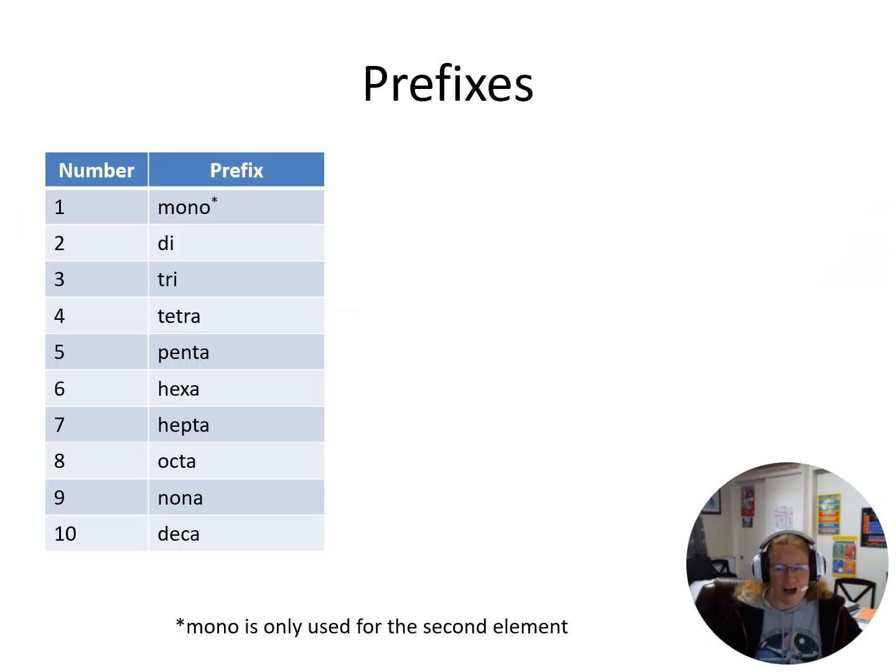Mono is only used for the second element, because again, if I only have one of the first element I don't need to use a prefix. You are going to need to learn the names of all of these non-metal elements and you are going to need to learn these prefixes here so that you can understand the language that we're speaking when we talk more chemistry.